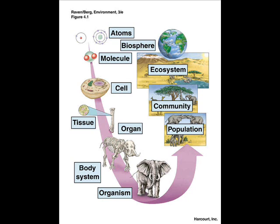Groups of organs that work together to perform a specific function are called organ systems. Examples include the digestive, circulatory, respiratory, nervous, muscular, and skeletal systems, as well as the integumentary system — the skin. In plants, an example is the vascular system, made up of xylem and phloem — the tubes that carry water, nutrients, and sugar throughout the plant.